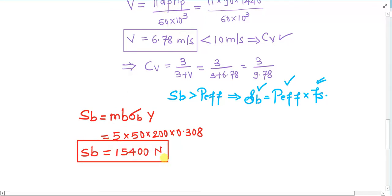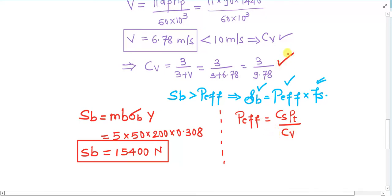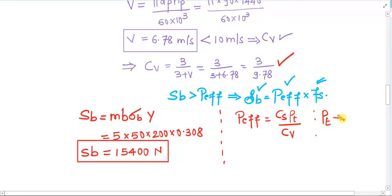Sb is now available, but we do not yet have P_effective. P_effective = (Cs × Pt) / Cv. We have Cs, and we just recalculated Cv, but we do not have Pt. To determine Pt, we need Mt (torque), which is obtained from the power to be transmitted.